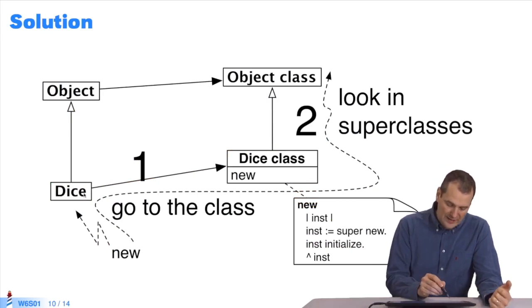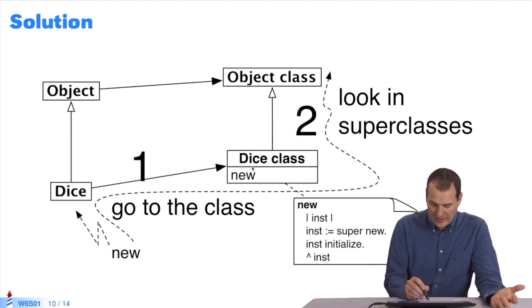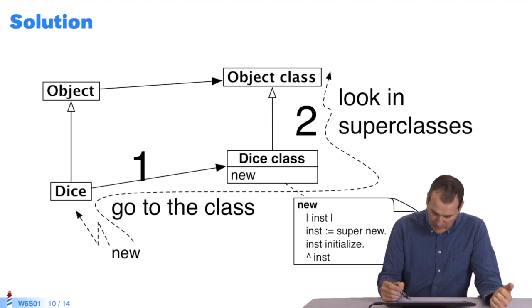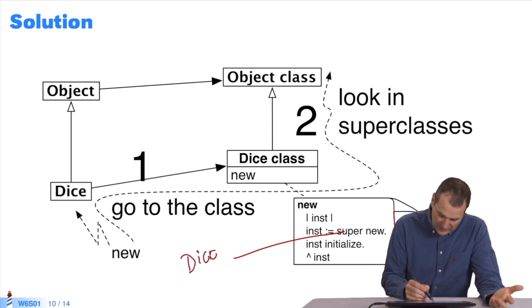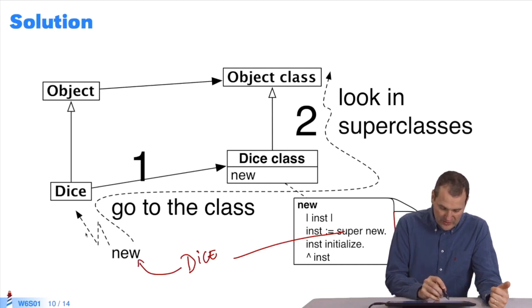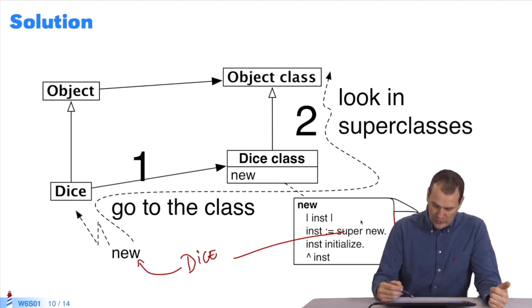When I send new to Dice, where do I look? Which class do I look in? I look in Dice class. This is where I use my famous method. What do I do now? What did we say about super? Super is the Dice class. It is the receiver. I sent the message to this object.